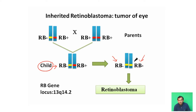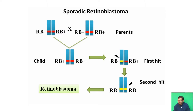The RB gene is located on chromosome number 13 at the 14.2 band. Retinoblastoma can also develop sporadically.